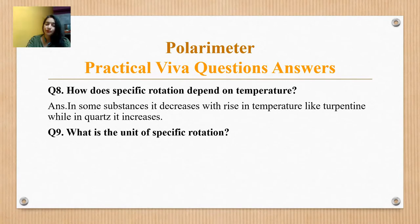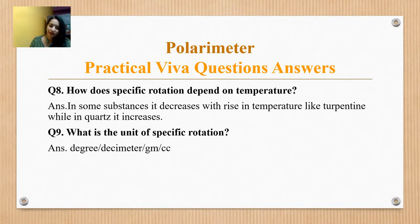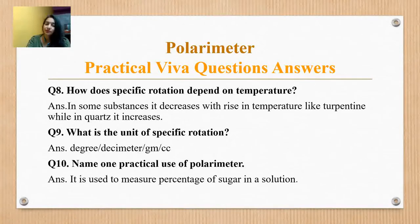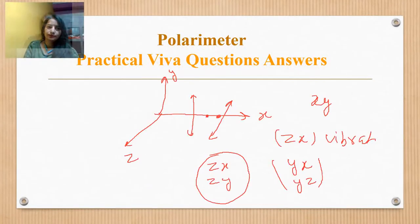What is the unit of specific rotation? Specific rotation is denoted as theta upon L times C. So theta means degrees, L is the length of the polarimeter tube measured in decimeters, and C is the concentration in g per cc. One practical use of the polarimeter is that it is used to measure the percentage of sugar in a solution.